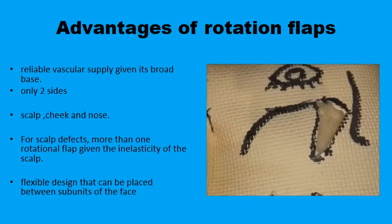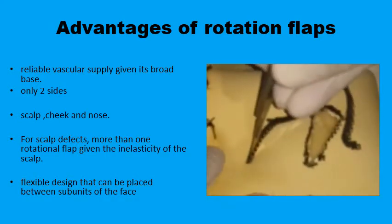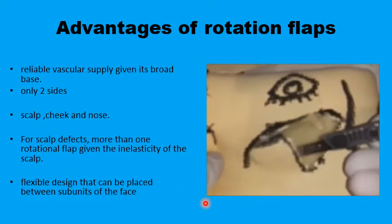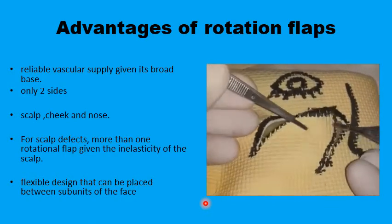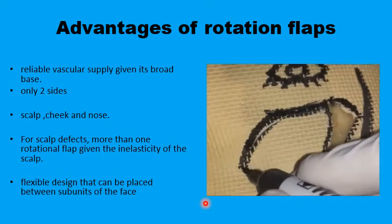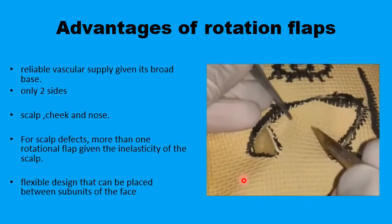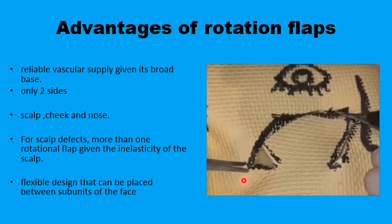There are several advantages of rotation flaps. The blood supply is usually reliable because of the wide base in relation to the height of the flap. You end up with only two sides to suture, making it easier to align these lines with relaxed skin tension lines. And if you have enough tissue on both sides of the defect, you can use two rotation flaps — as in the scalp, for example.